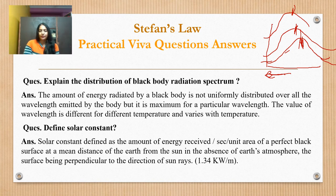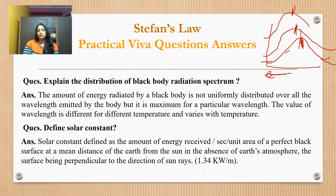The energy received per second per unit area of a perfect black surface at the mean distance from the earth — from the sun, in the absence of the earth's atmosphere, the surface being perpendicular to the direction of sun rays — is approximately 1.34 kilowatts per meter square.